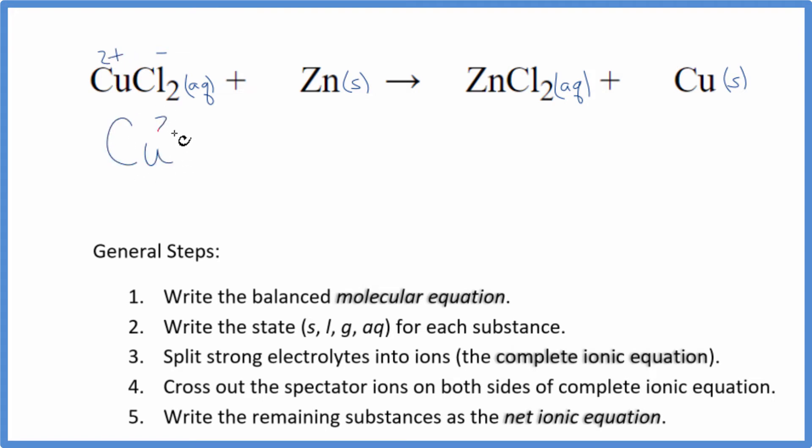So we have the copper two ion. I'll write the states later. Let's not do that now. Two chloride ions. And then for the zinc, it's just Zn solid. We're not going to split that apart in our net ionic equation. So those are the reactants.